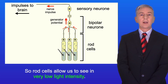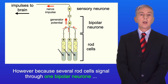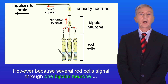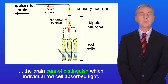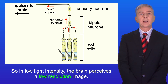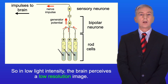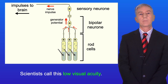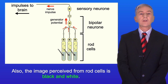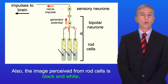Rod cells allow us to see in very low light intensity. However, because several rod cells signal through one bipolar neuron, the brain cannot distinguish which individual rod cell absorbed light. So in low light intensity the brain perceives a low resolution image — scientists call this low visual acuity. Also, the image perceived from rod cells is black and white.